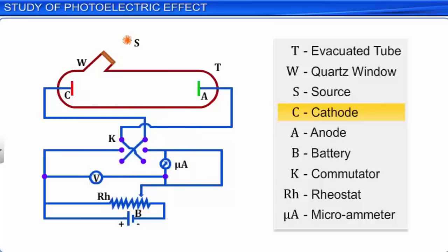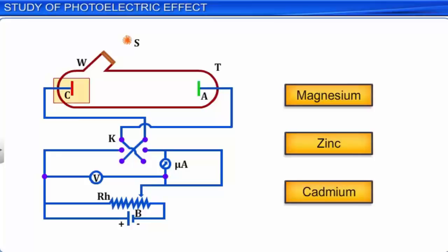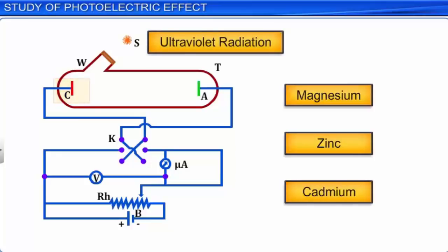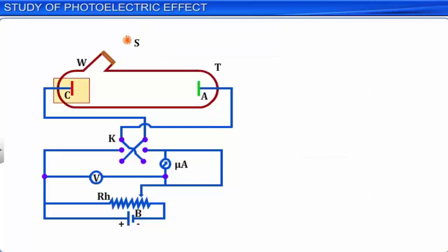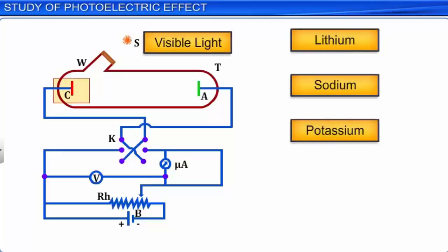The emitter plate C can be made of photosensitive metals like magnesium, zinc, and cadmium. These metals produce the photoelectric effect with ultraviolet radiation. However, if the source of light used is visible light, then the photoelectric effect is observed with metals like lithium, sodium, potassium, cesium, and rubidium.